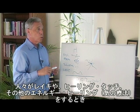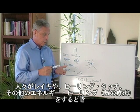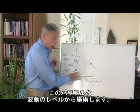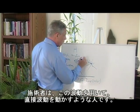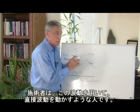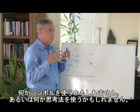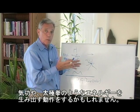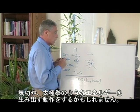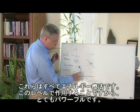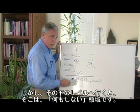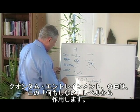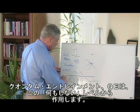When people do healing techniques like Reiki, healing touch, and other forms of energy healing, they do it on the very powerful level of the wave. They take the wave and make it move in a direction — through symbols, through ways of thinking, or through forms of movement like Tai Chi and Qigong. That's all energy, and it's very powerful from that level. But when we slip below that level, this is an area of no doing — and that is the level that quantum entrainment works from.